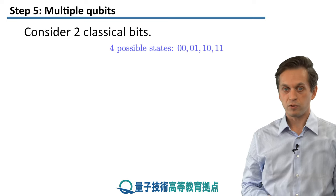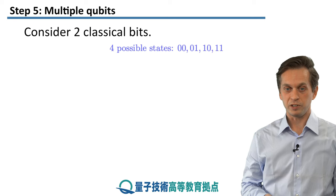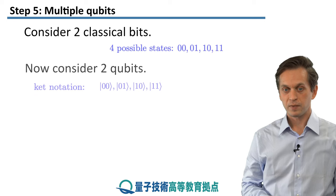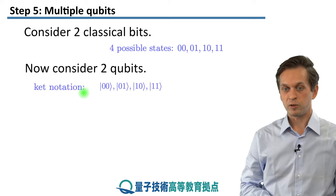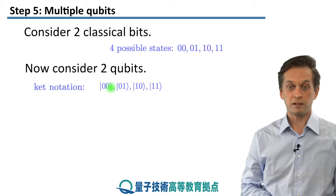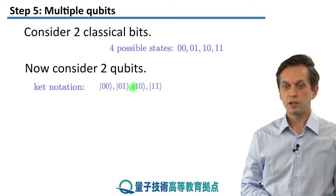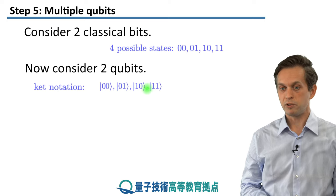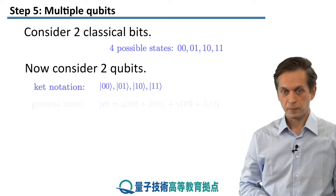What's the case for quantum bits? Again, we flip to Dirac notation. We can have the ket |00⟩, ket |01⟩, ket |10⟩, and ket |11⟩.